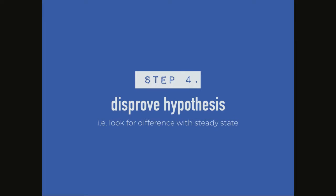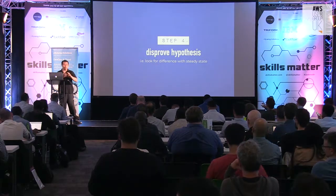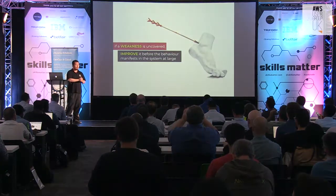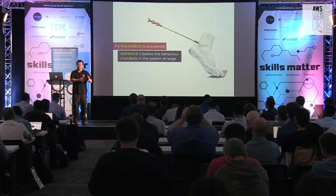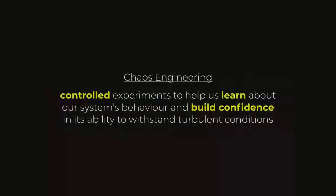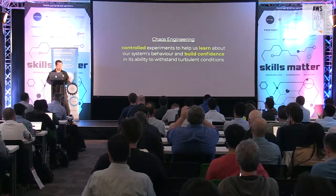Once you run your experiment, you want to go back and look at the data to prove or disprove your original hypothesis in terms of how your system should behave under those failure conditions. If you find evidence that your steady state was impacted by the failure you were injecting, then great — you've uncovered a weakness you may not have known about before, and now you have time to build defenses so that by the time something happens in production, you know you're well protected. Chaos engineering is about using controlled experiments to learn how a system behaves under different failure modes so we can build confidence in its ability to withstand those conditions over time.